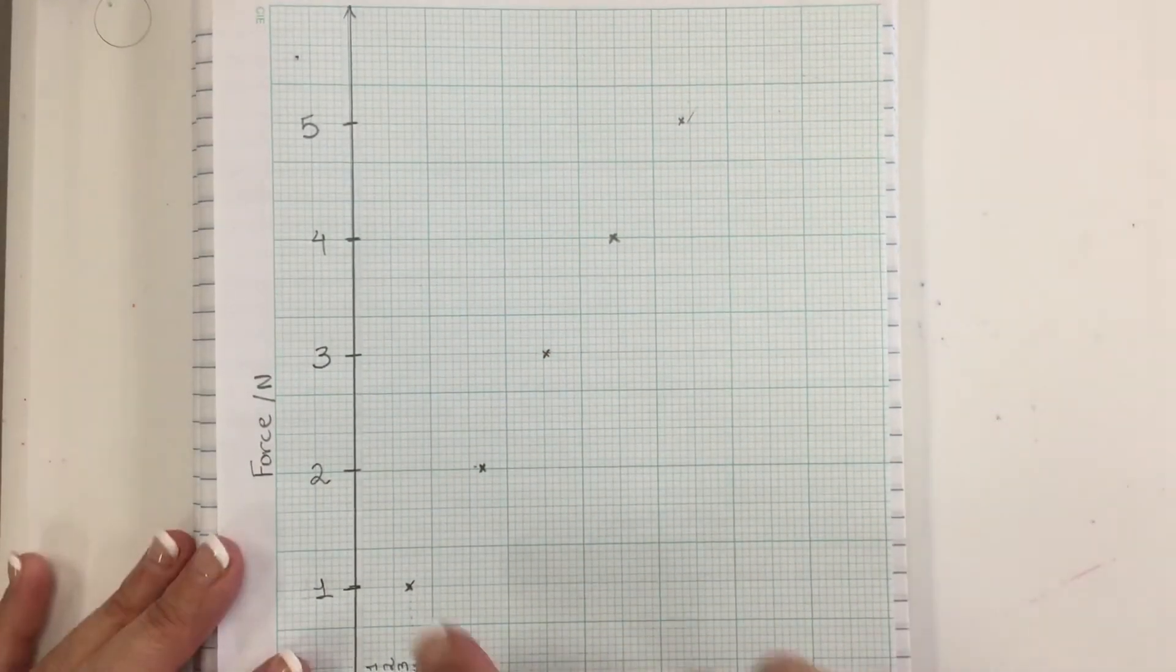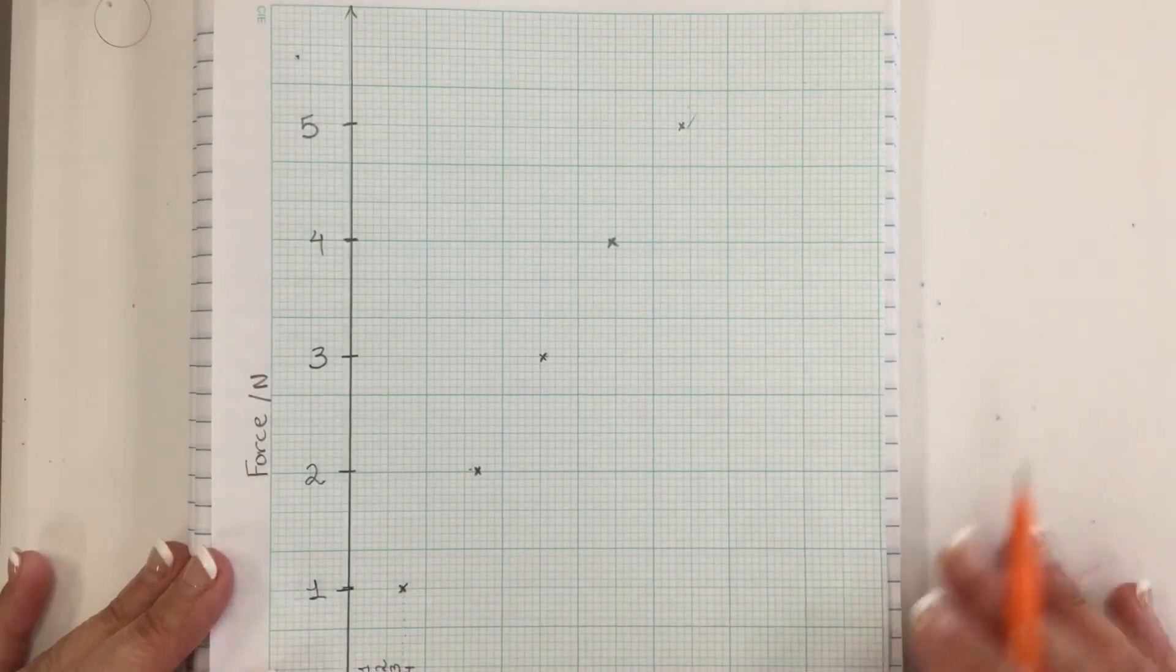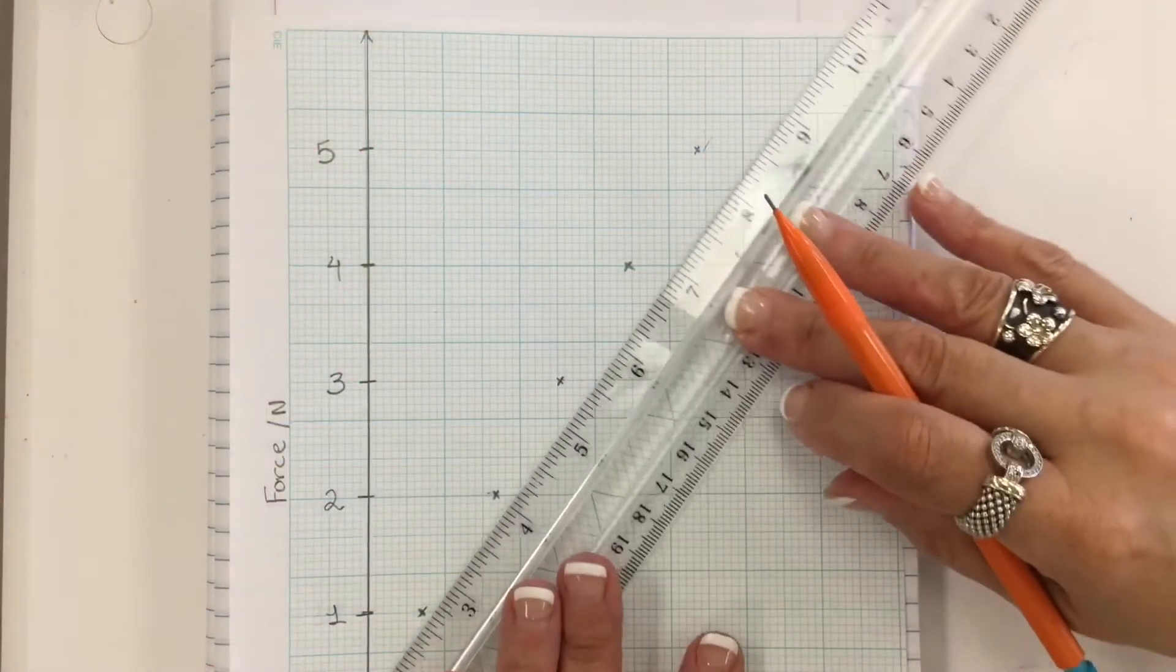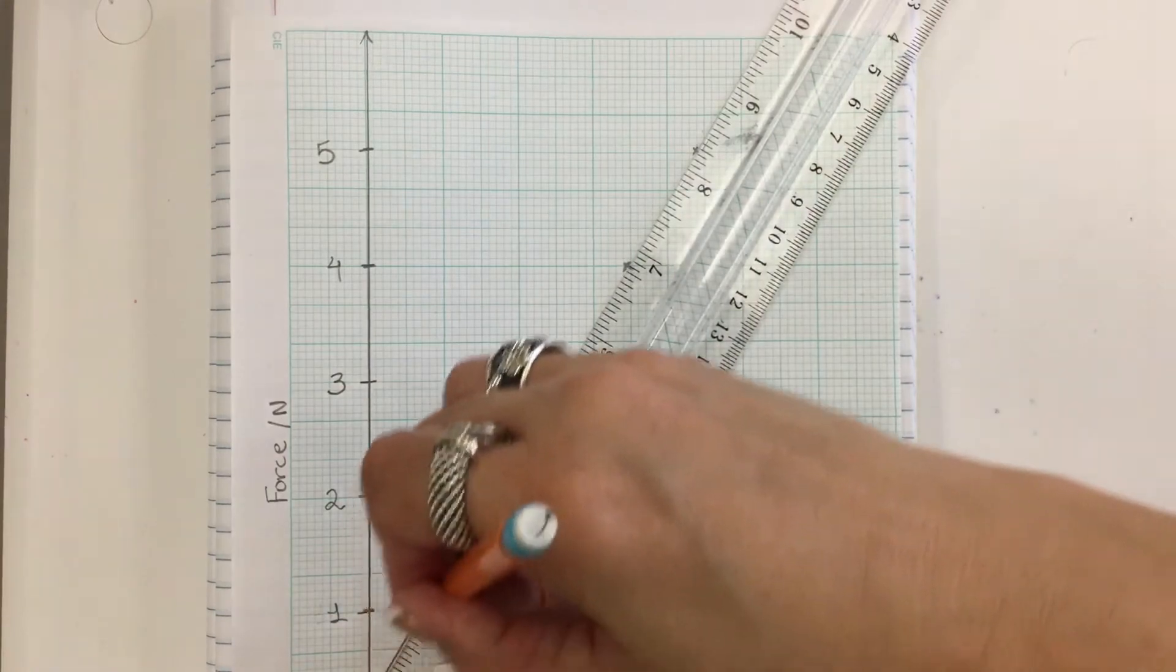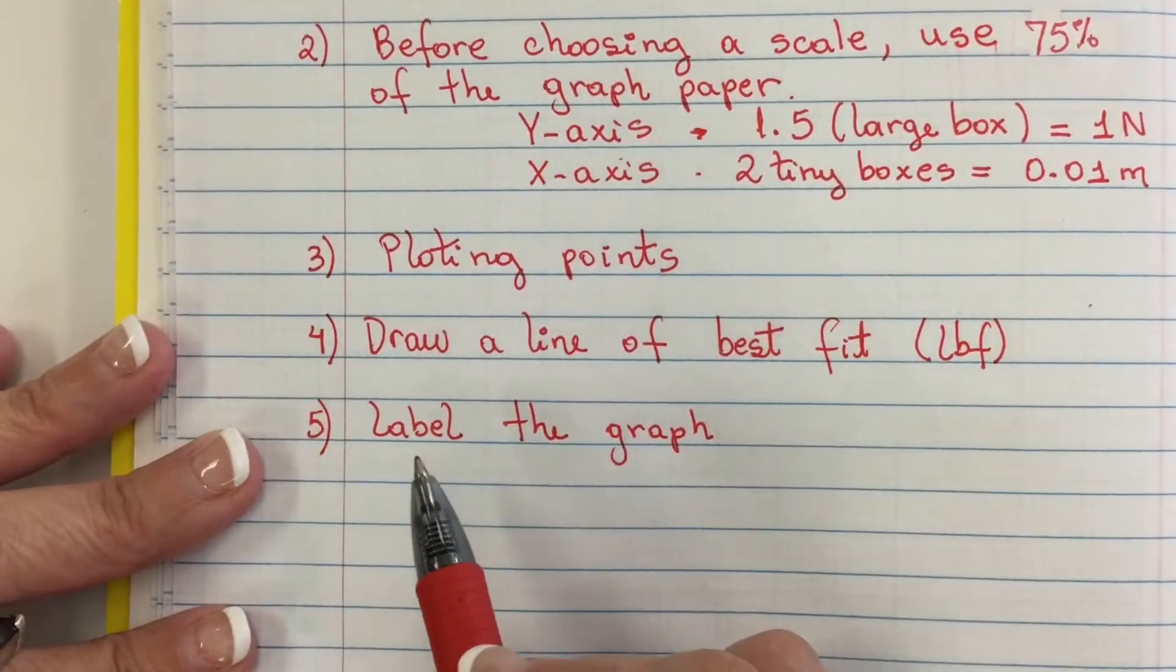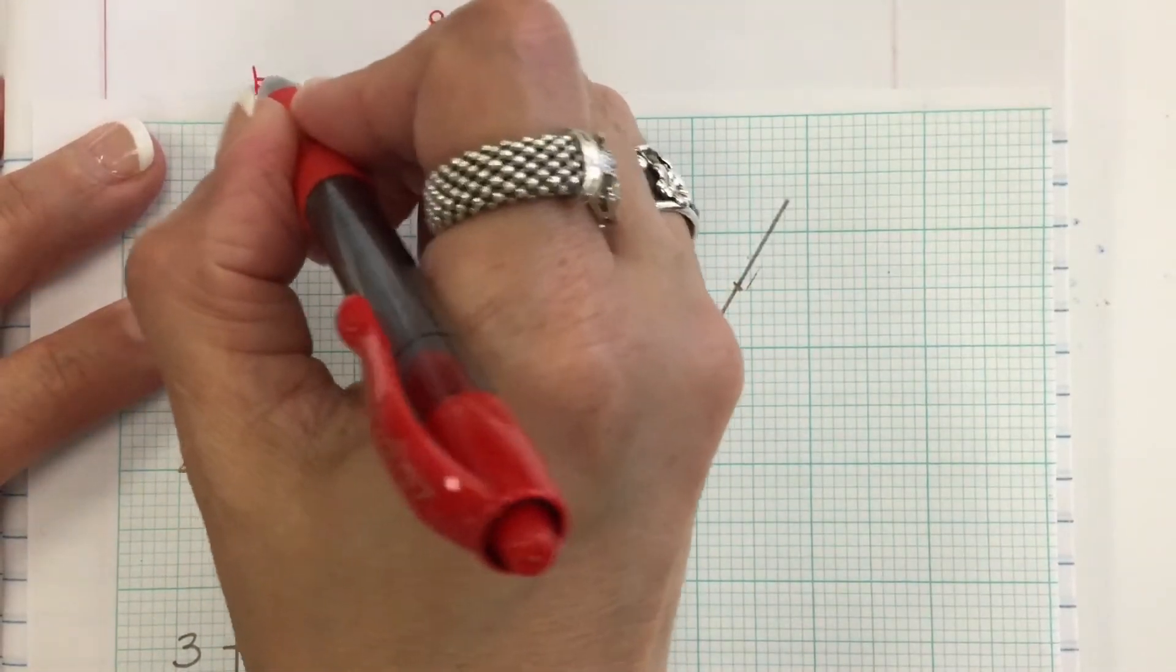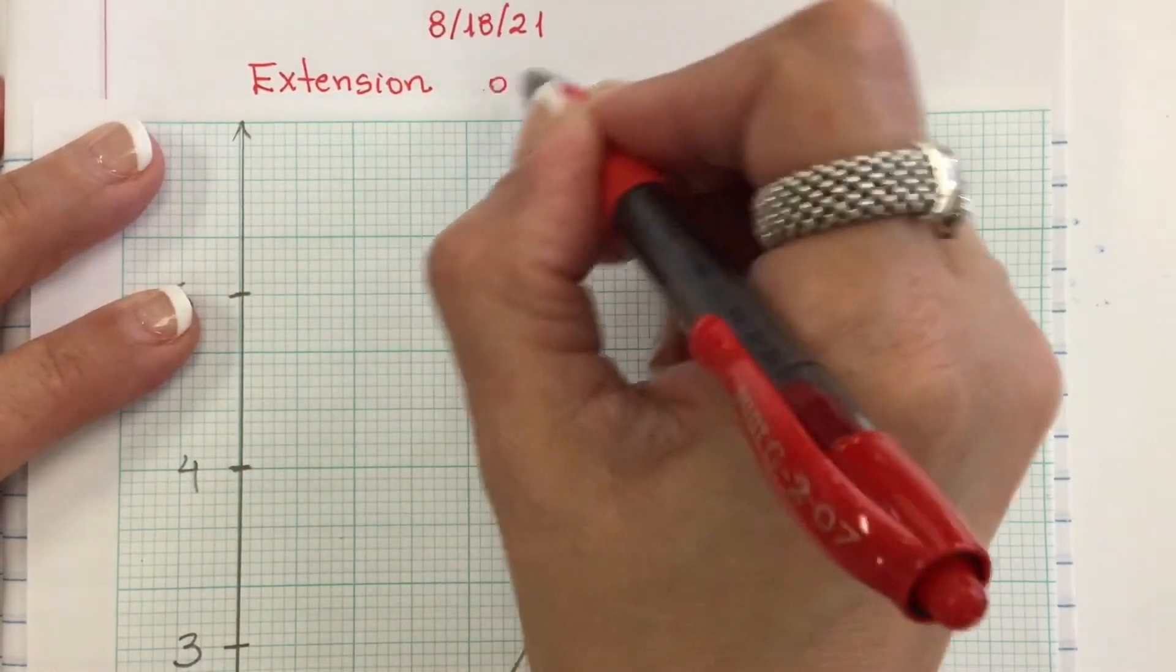So now I have 1, 2, 3, 4, 5 points plotted on this graph. Then I'm going to use my ruler and draw a line of best fit. Next, I'm going to give this graph a name. I'm going to label it: This is the extension of a spring.